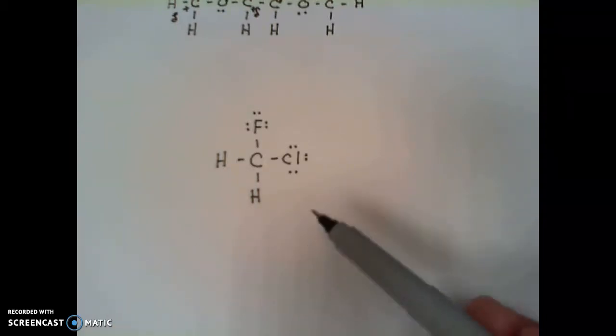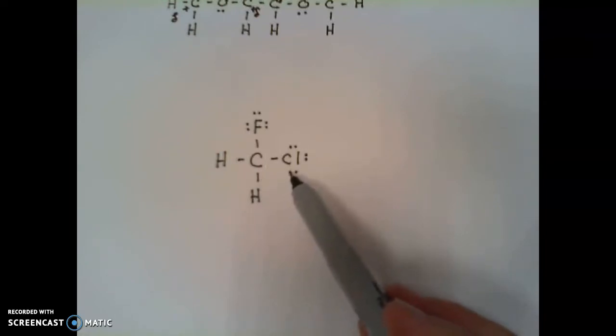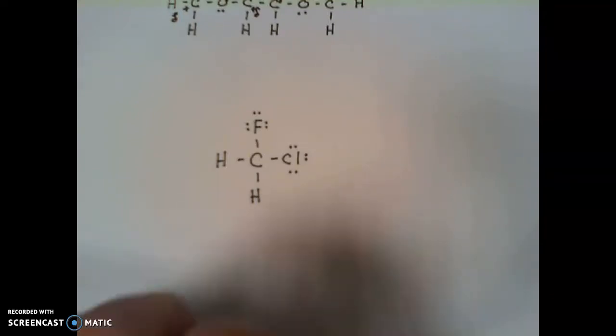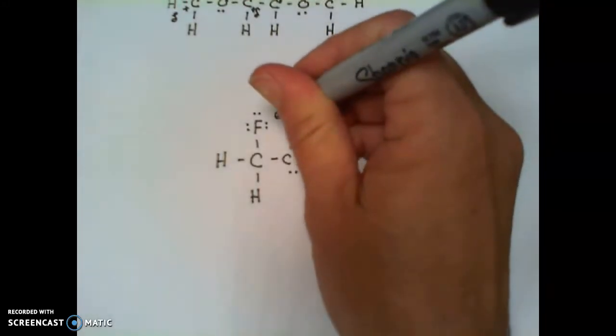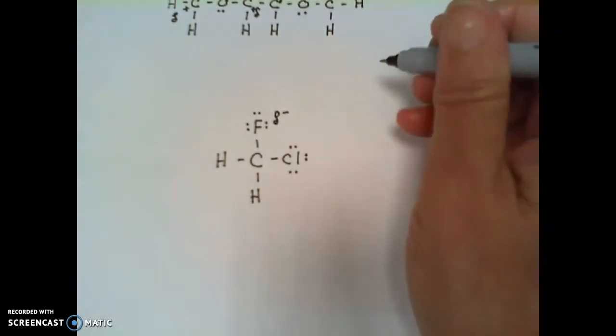The carbon-fluorine and the carbon-chloride bond are going to be polar bonds. Fluorine is the most electronegative element, and so it's going to have a partial negative charge.